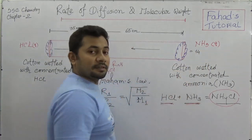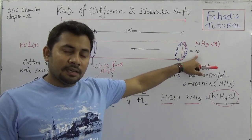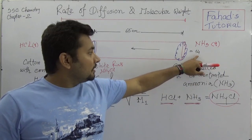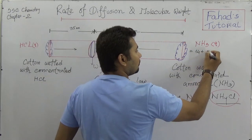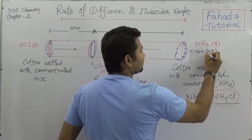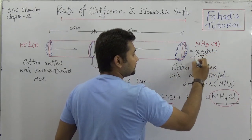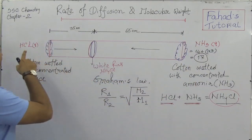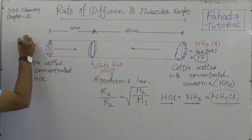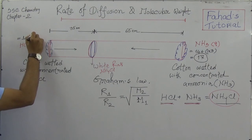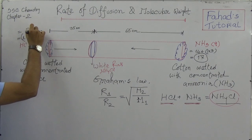If we look at the molecular weight of ammonia: the relative atomic weight of nitrogen is 14, and hydrogen is 1 times 3 (three hydrogen atoms). So the molecular weight of NH3 is 14 + 3 = 17.